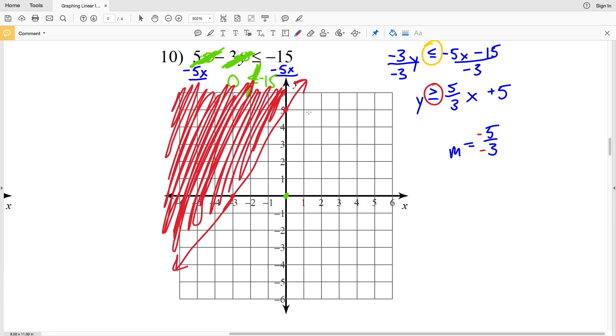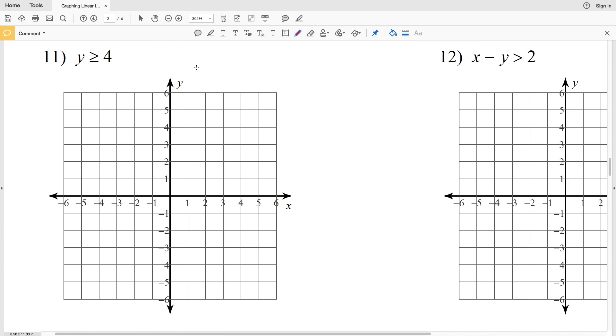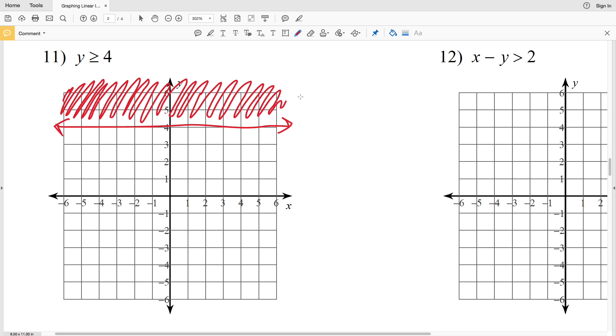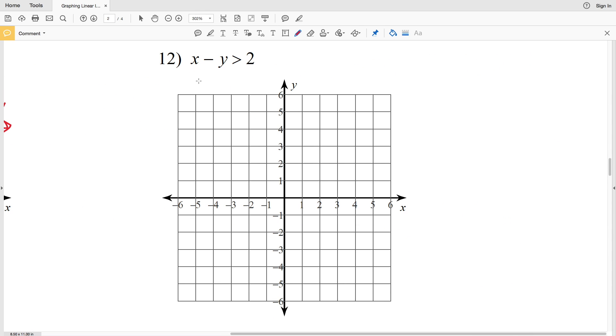And that's the answer to number 10. In number 11, our slope is 0, so it's going to be a horizontal line. We need to locate the y equals 4 line and it's going to be solid since it's greater than or equal to. Now we just have to decide which way we're going to shade. If y is everything greater than or equal to that 4, that's going to include 5, 6, and so on. So we're going to shade above that y equals 4 line.